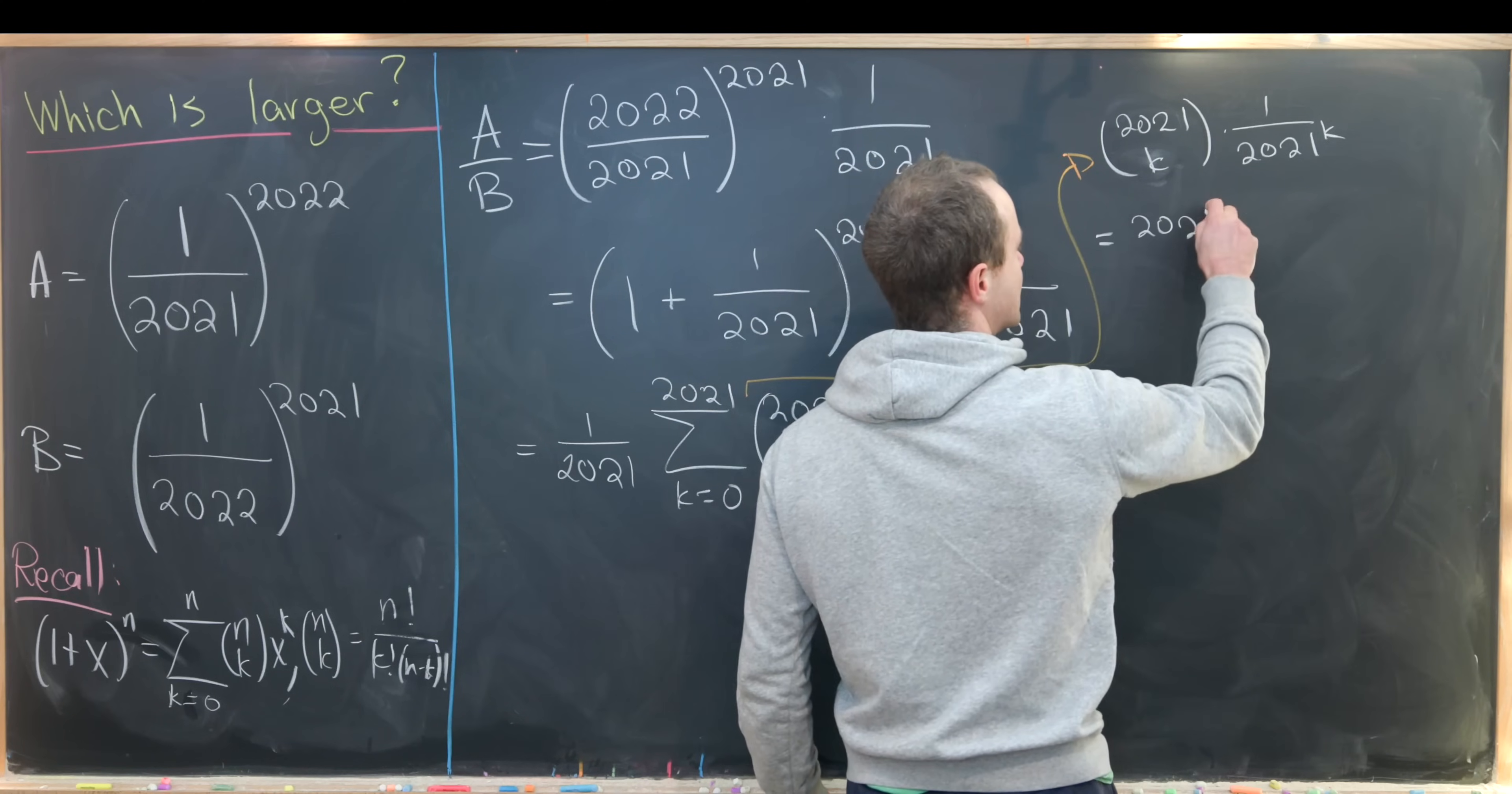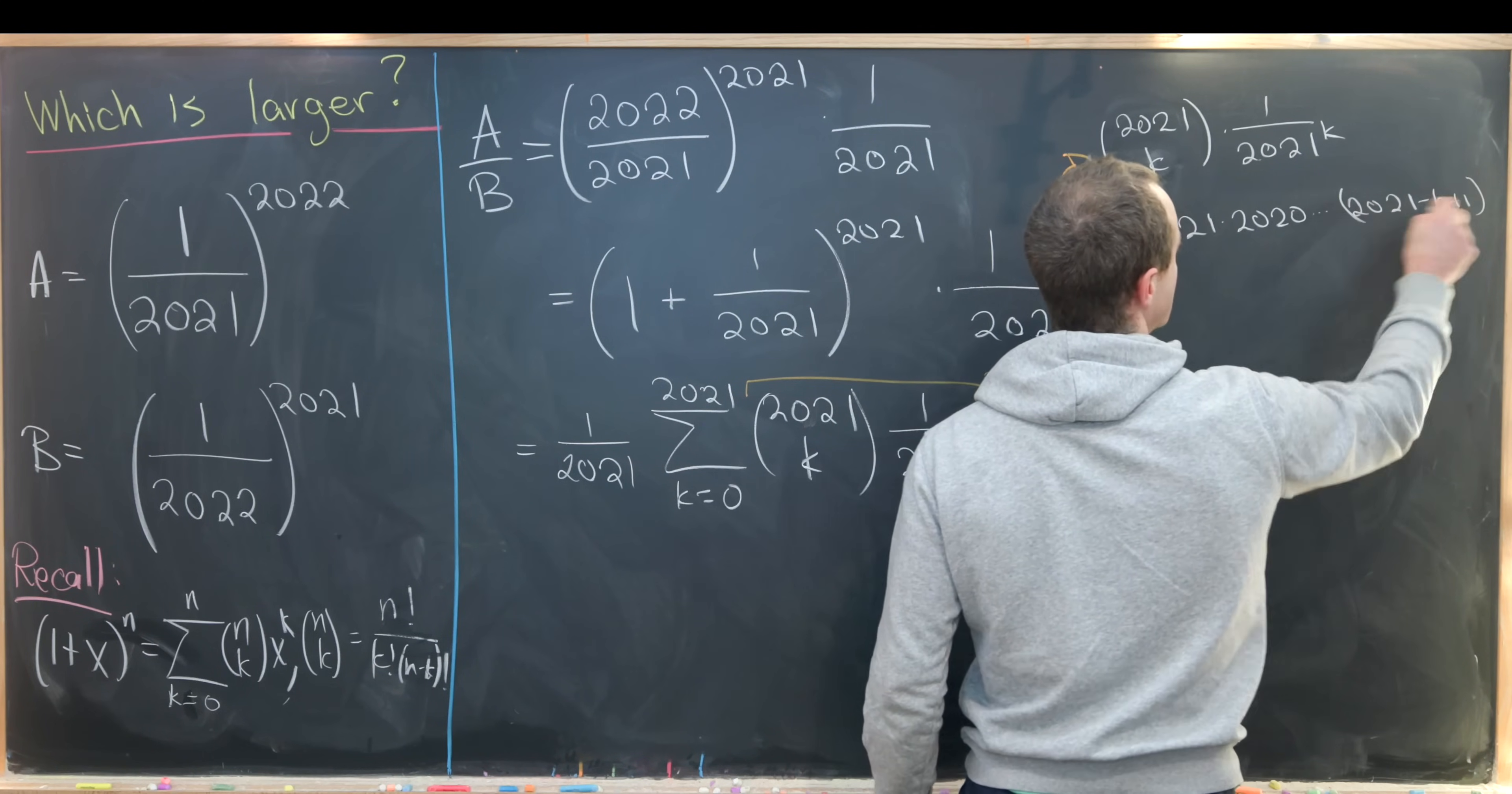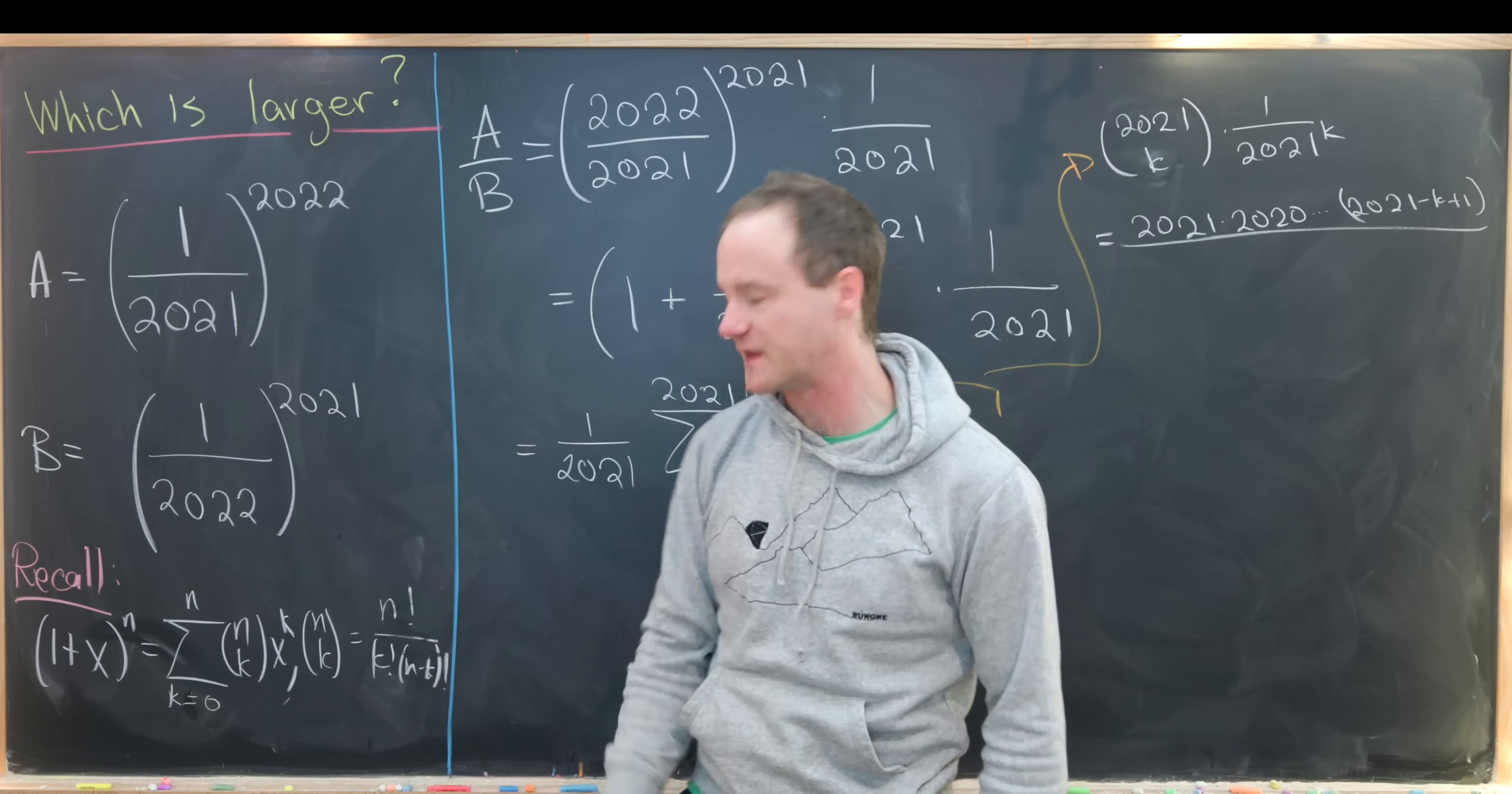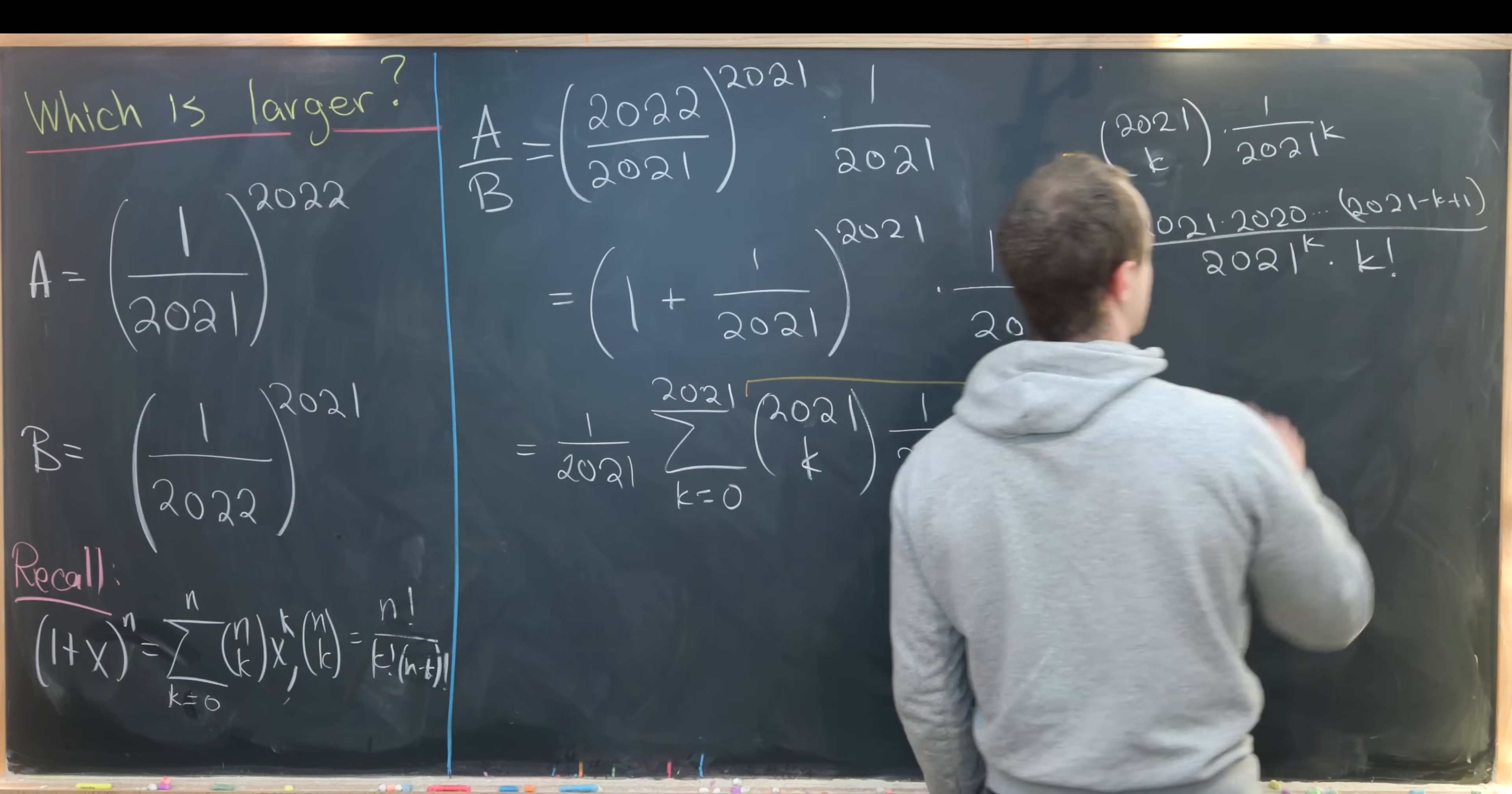We have 2021 choose k times 1 over 2021 to the k power. This is 2021 times 2020 all the way down to 2021 minus k plus 1. So there are k terms in the numerator. That's gotten by canceling this n minus k factorial with this n factorial in the numerator.